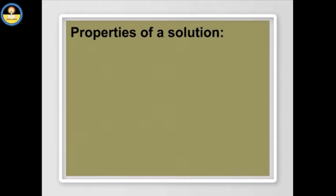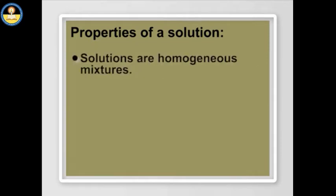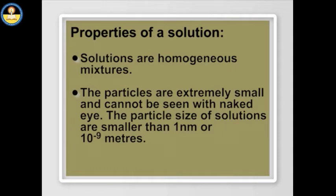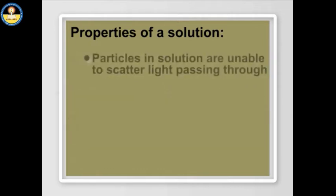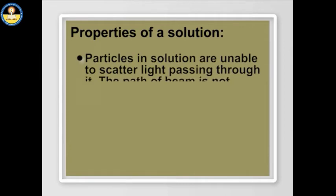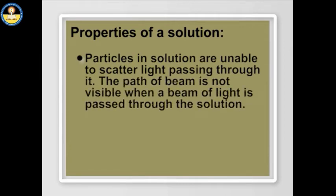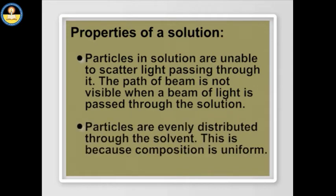Properties of a solution: Solutions are homogeneous mixtures. The particles are extremely small and cannot be seen with the naked eye — the particle size of solutions is smaller than 1 nm (10⁻⁹ metres). Particles in solution are unable to scatter light passing through it, so the path of a beam of light is not visible when passed through the solution. Particles are evenly distributed through the solvent because the composition is uniform.